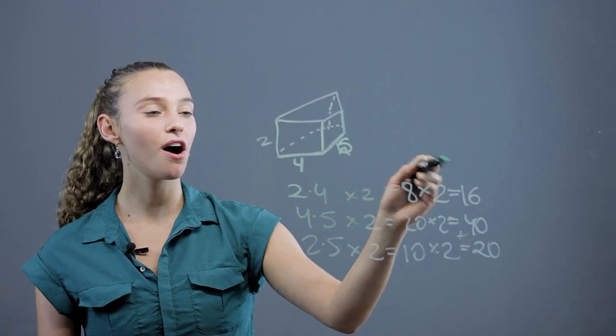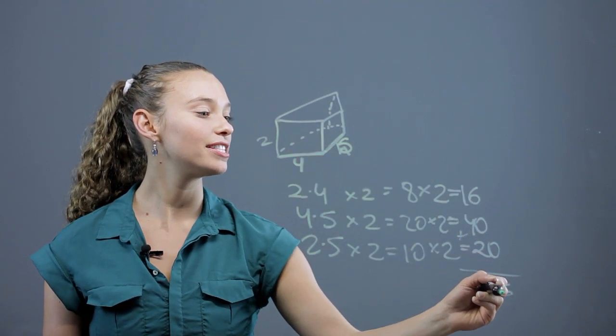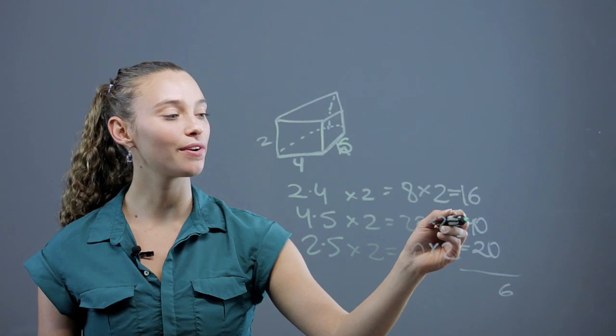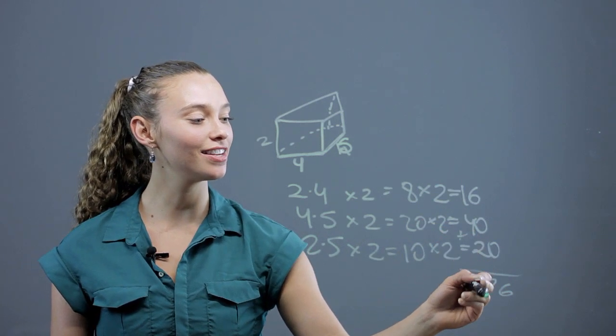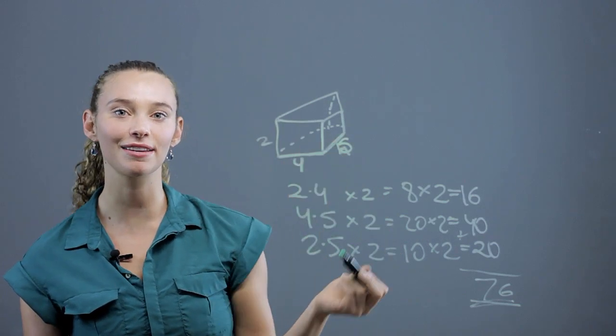Then we add them all together to get the whole surface area. We end up with a six. One plus four is five, plus two is seven. And that is the answer to the surface area of this rectangular prism.